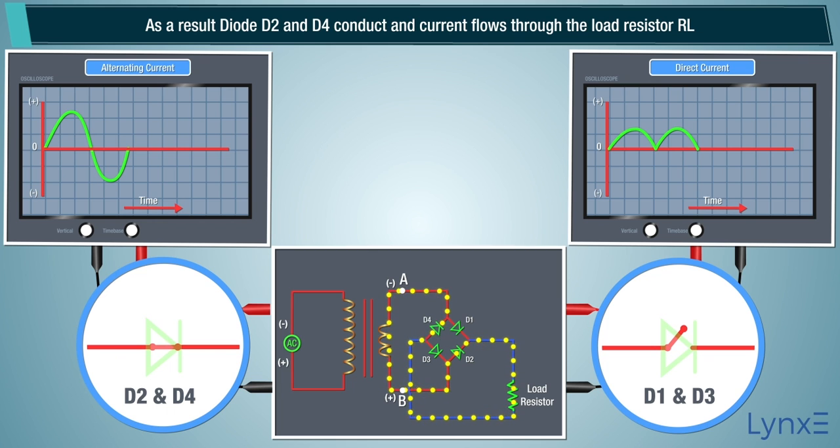As a result, diodes D2 and D4 conduct and current flows through the load resistor RL.